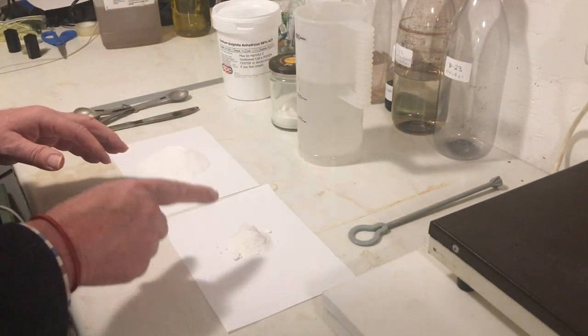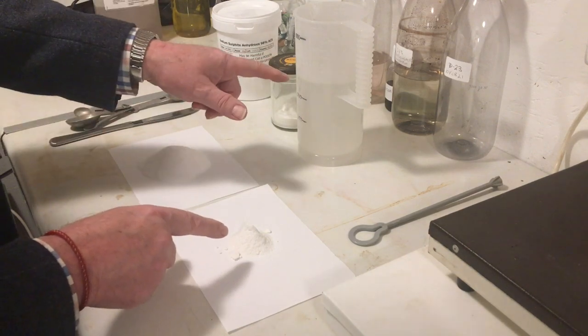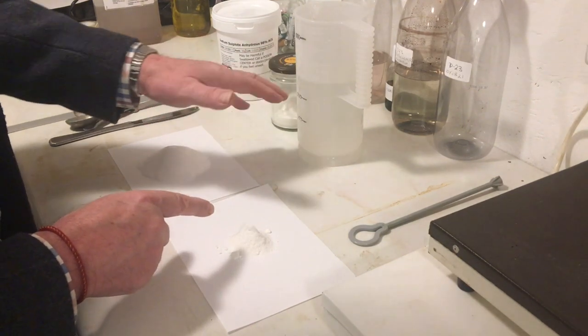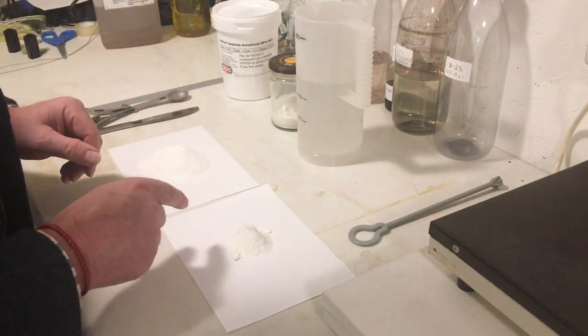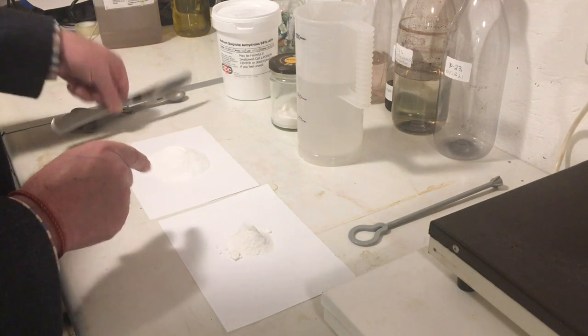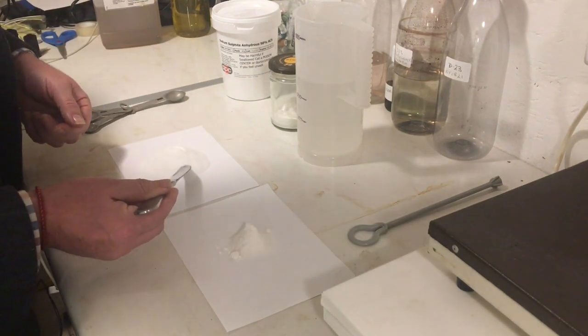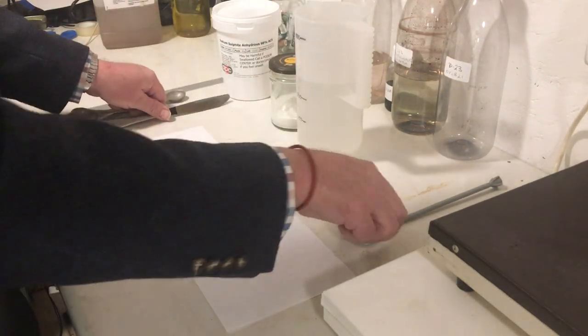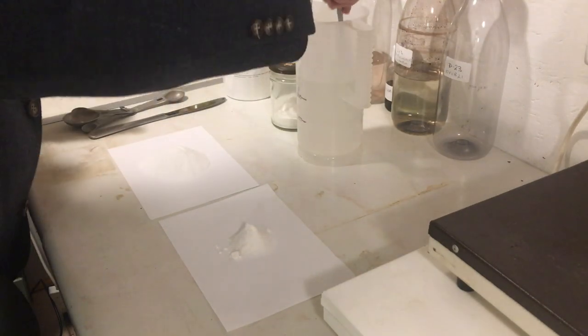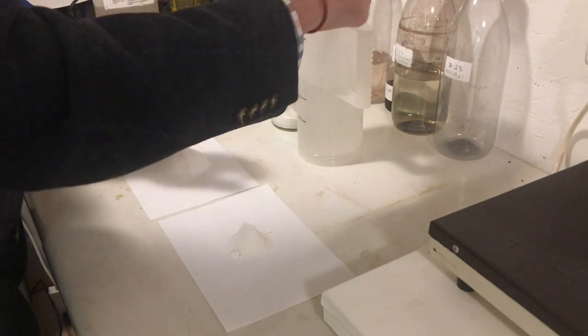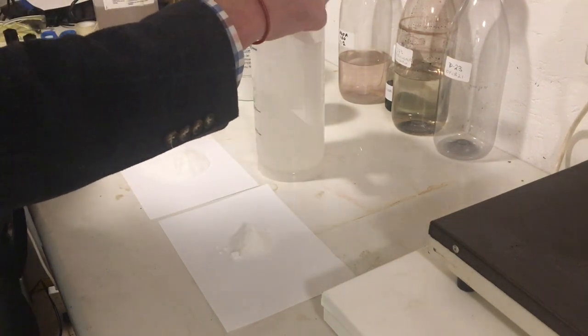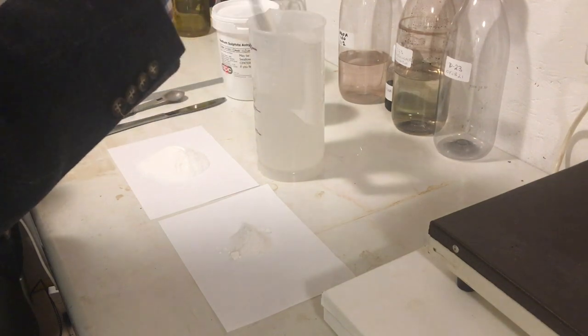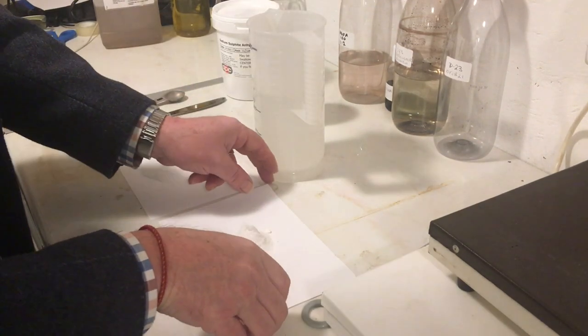Metol oxidizes very easily, especially when it's in solution. So what we need to do is remove any dissolved oxygen, the stuff the fish breathes with, that's inside this water here. And to do that we just add a very small amount, a pinch. Just a pinch of the sodium sulfite. I'm going to pop that in there and dissolve it in. Sodium sulfite is a very powerful antioxidant. So just that first pinch is dissolved already.